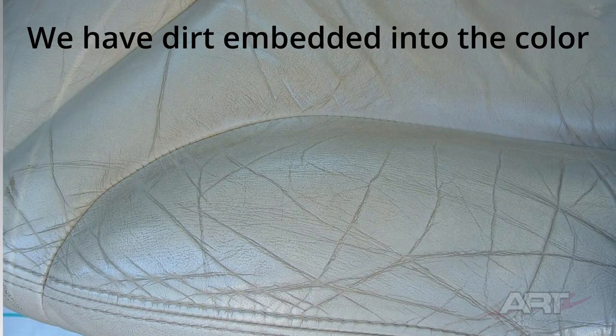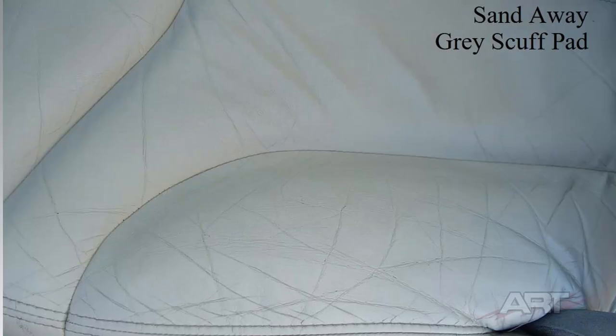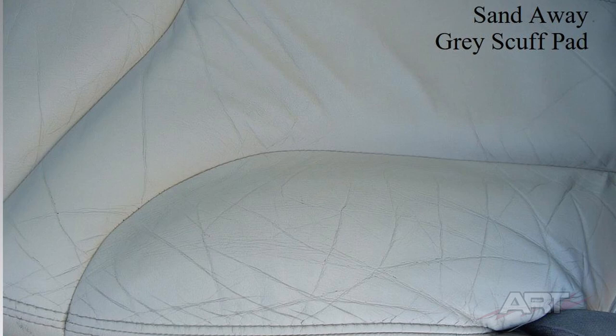On some heavily soiled seats, even after getting the contaminants off the surface, there is dirt embedded into the color. If we get more aggressive and sand a little deeper, we can get some of the top coat color off, taking the dirt with it — and that's very beneficial. We might have to knuckle our scuff pad in there or go to a stronger cleaner. That way we at least get a starting point that's a lot cleaner for our color coat.